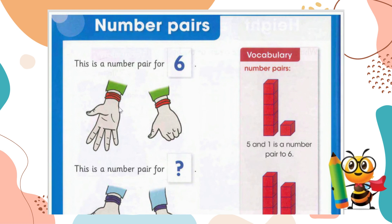So five plus one makes six. This is a number pair of six. Let's count collectively: one, two, three, four, five, six — yes, that's right. Five and one are a number pair of six. When five combines with one it makes six, so they are both a number pair of six.